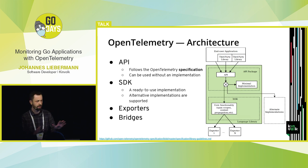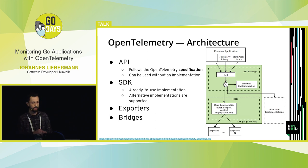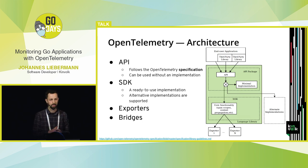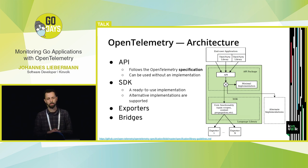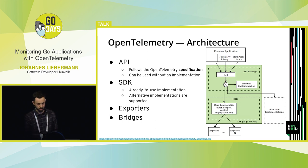Bridges are the last part. They allow you to easily migrate from OpenTracing and OpenCensus to OpenTelemetry. So if you have a Go application that is already instrumented using OpenTracing, you can already use OpenTelemetry today. You don't have to change anything — you just change three lines somewhere in the main function when you initialize everything. You don't need to re-instrument.